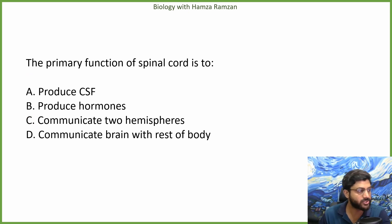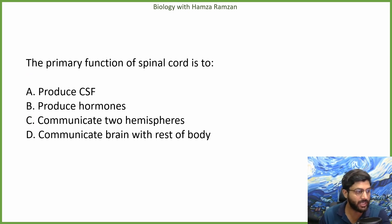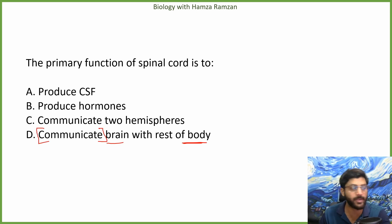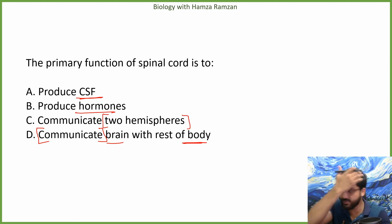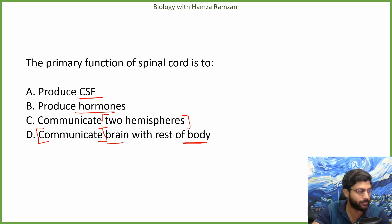The primary function of the spinal cord is to make a connection and communication between the body and the brain. The spinal cord does not produce cerebrospinal fluid, does not produce hormones, and does not have hemispheres.